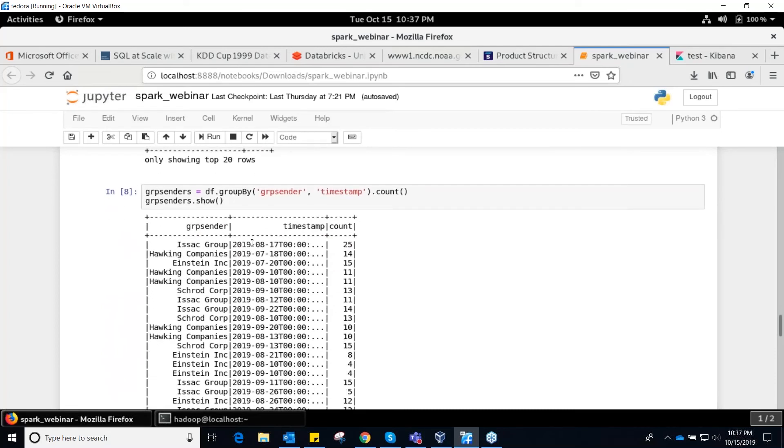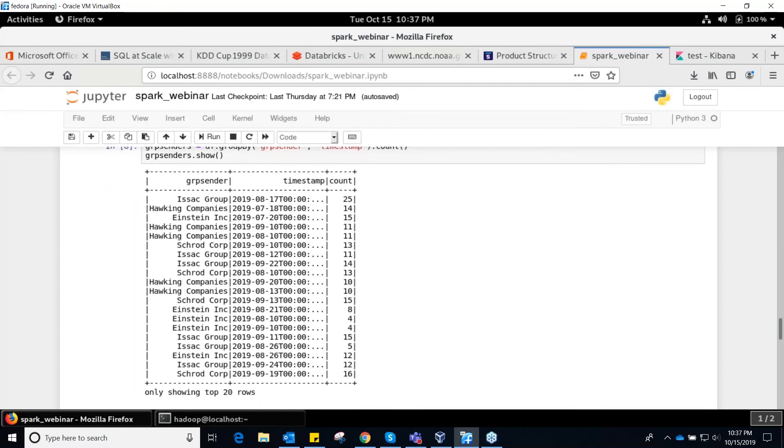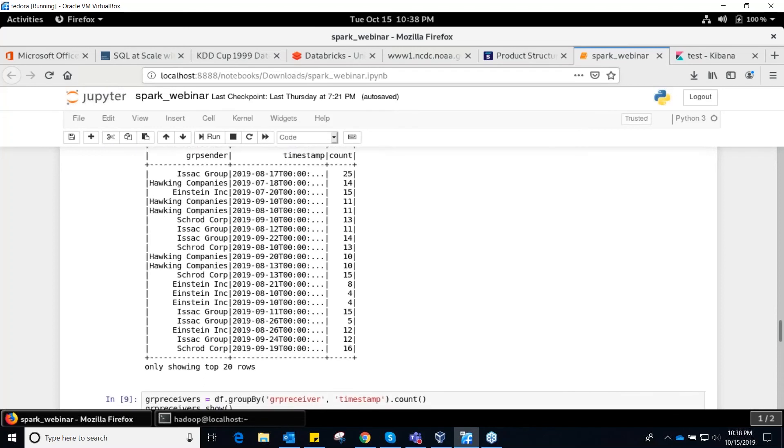If I want to make this query a bit more complex and I want to identify how many orders am I receiving by one of the group centers per day, then I can do a group by on two variables. I can identify that I want to group on the basis of the group center and I want to group on the basis of timestamp. Then I want to perform a count. So it's going to give me exact details about each of these group sending companies. The purchase orders on 17th of August by ASIC signed by SR Group were a total of 25, and similarly, purchase orders sent out by Hawking companies on 18th of July or 14, and the list just goes on.